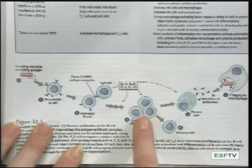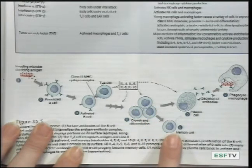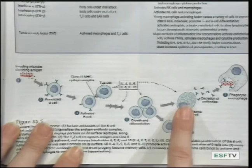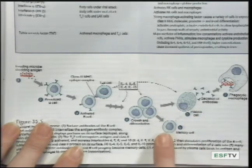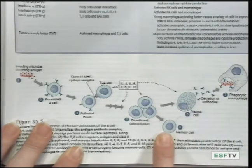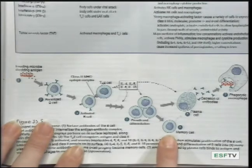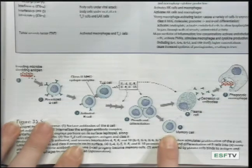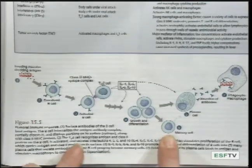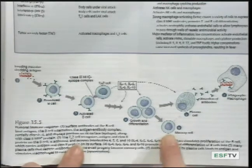These B cells will differentiate into memory cells, as well as plasma cells. The memory cells are long living cells that will be present in the body and will help to mount any future immune responses when this antigen may be encountered again.